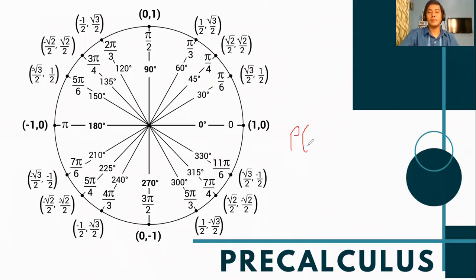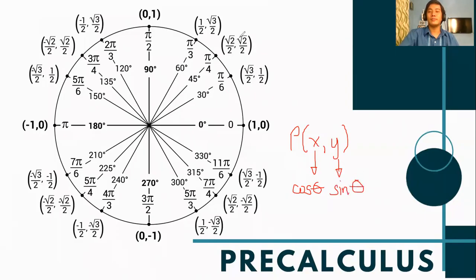Let's have a review of the trigonometric point P with coordinates x and y. The x value is referred to as the cosine of the angle, while the y value is referred to as the sine of the angle. We also discussed in our previous topic that the tangent function can be solved by dividing the sine function over the cosine function, which is y divided by x. And of course, the other three reciprocal functions — which are the secant, cosecant, and cotangent functions — can be obtained by getting the reciprocals of each.